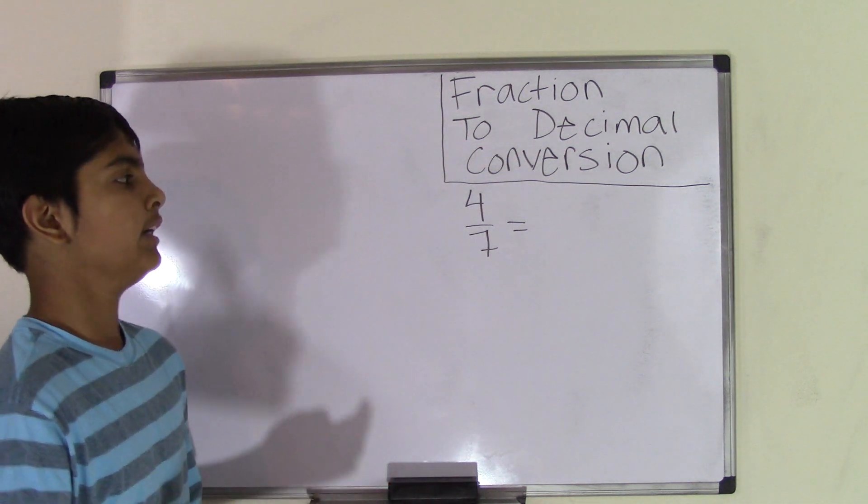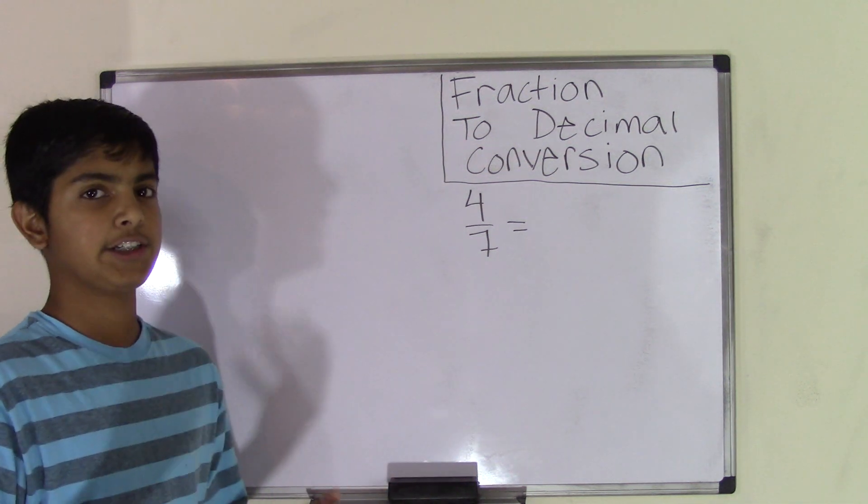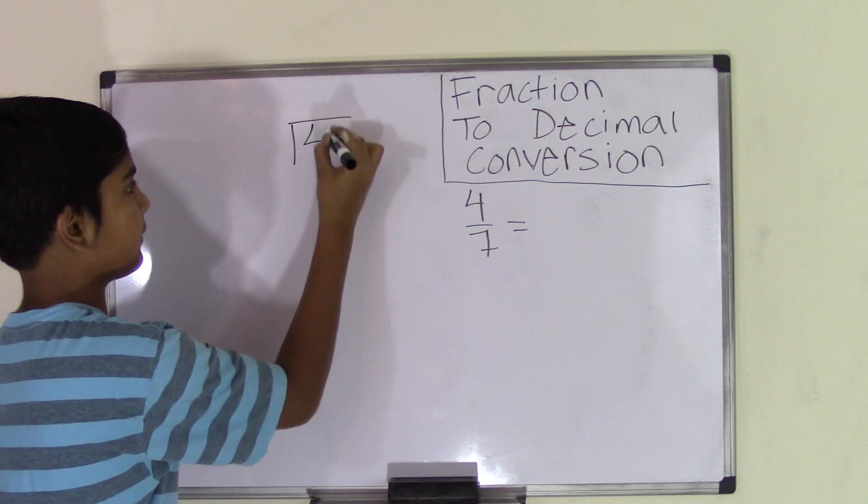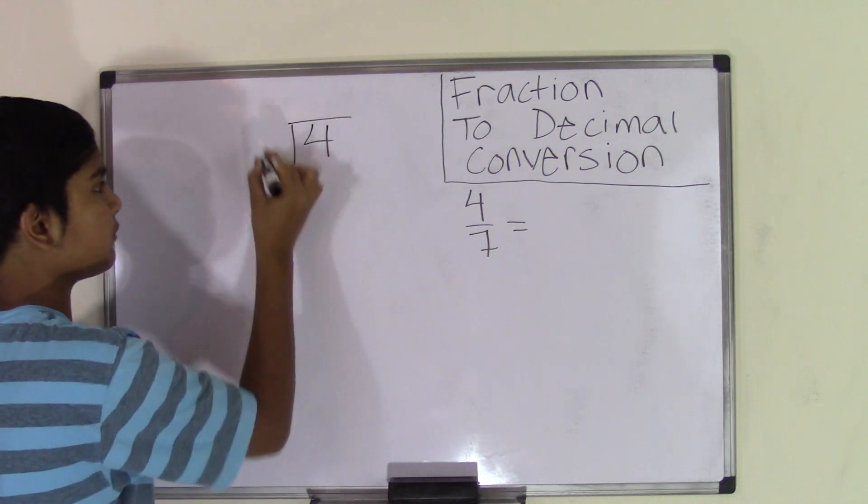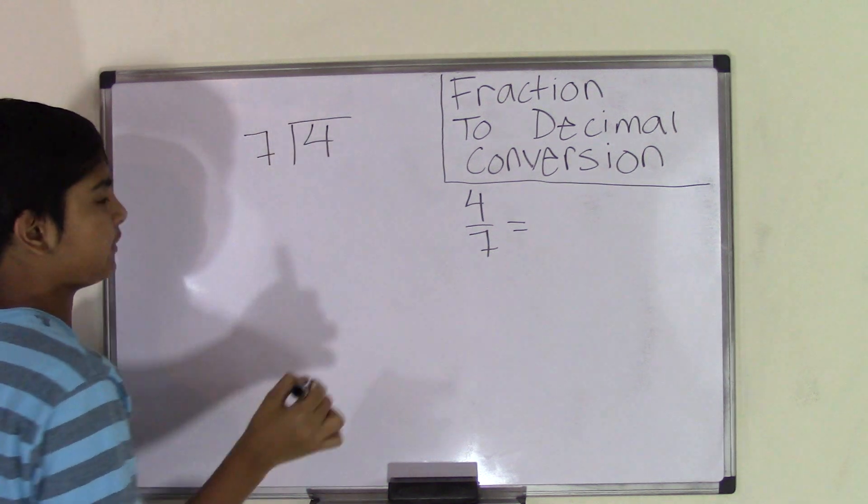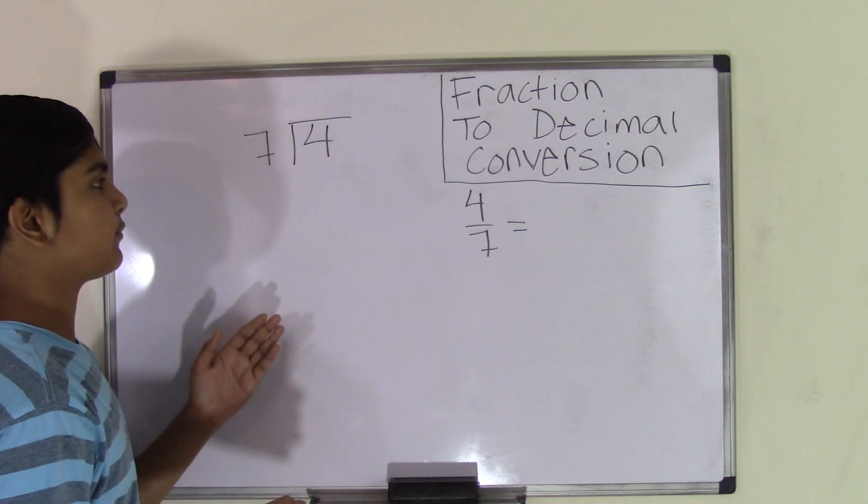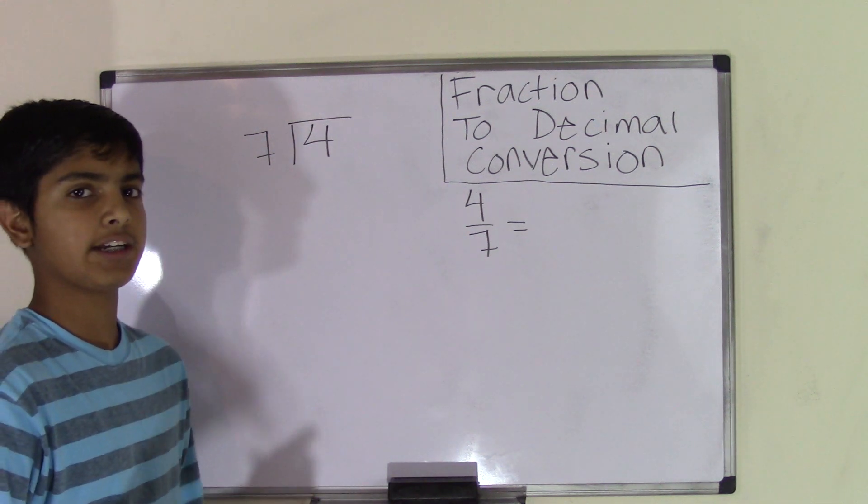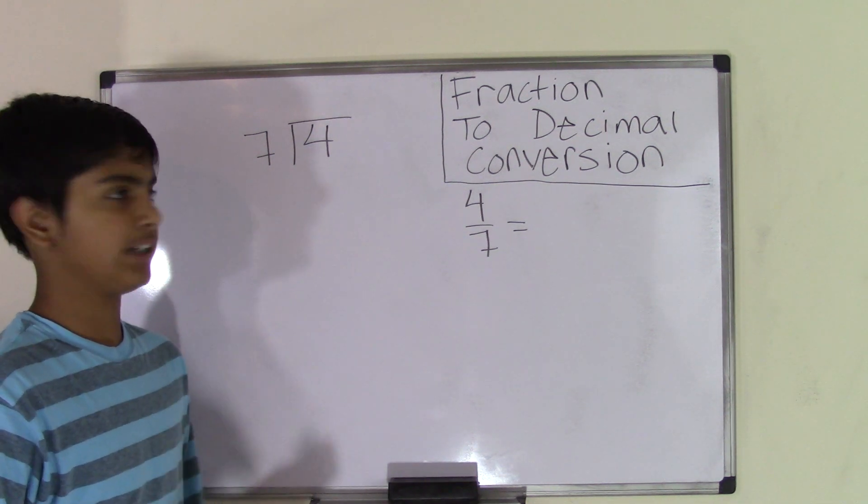Now to do that, we'll have to divide the numerator by the denominator. So the number 4, which is the numerator, will become the dividend, and the number 7, which is our denominator, will become the divisor. Now we know that the number 4 is less than the number 7, so we need to make it divisible by 7 by making it larger. And to do that, we need to add zeros.